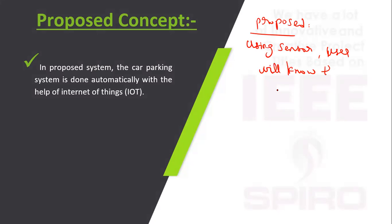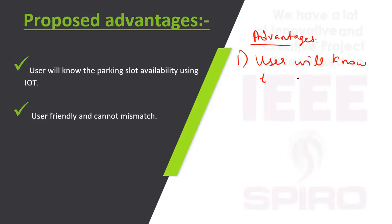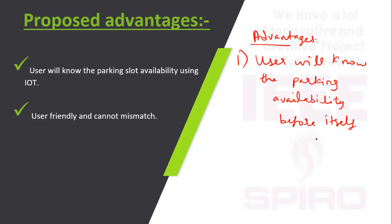Using IoT, we can know the parking space status. This is our proposed method. Advantages: the user will know the parking availability beforehand using IoT, and this system is user friendly.